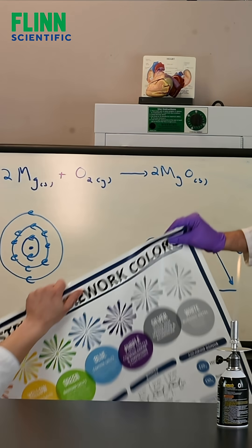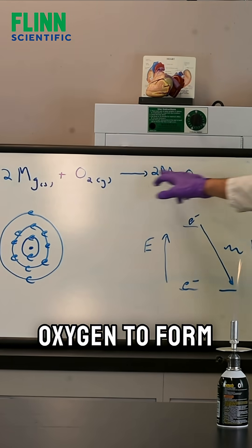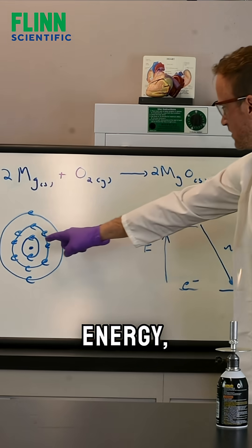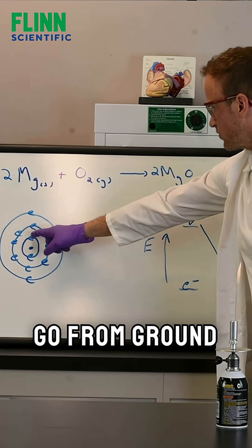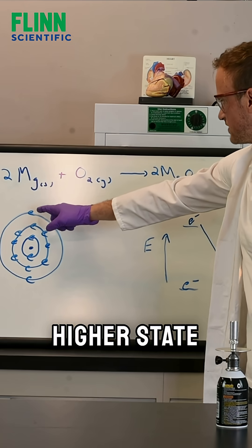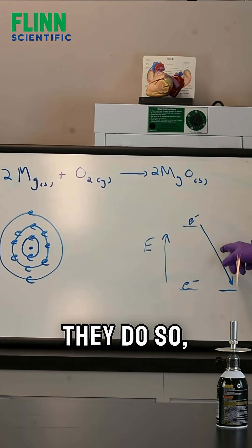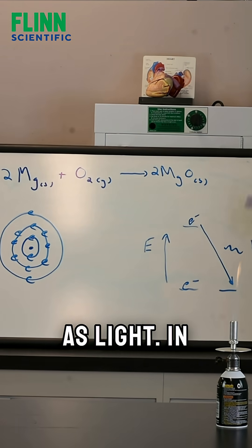We already said that we react magnesium with oxygen to form magnesium oxide. What happens when you have all that heat energy, electrons in the magnesium go from ground state energy levels to higher state energy levels. They immediately relax back down, and when they do so, they release their energy as light.